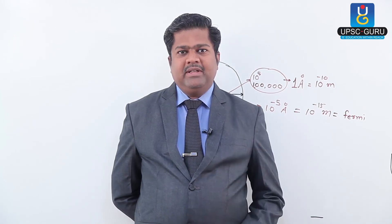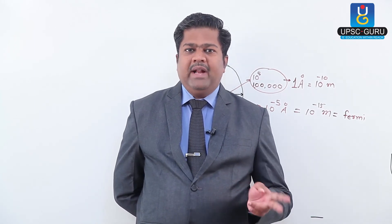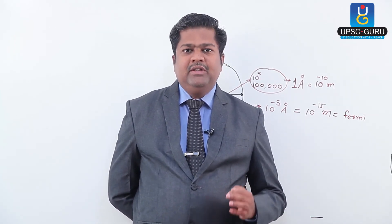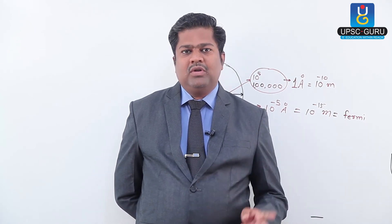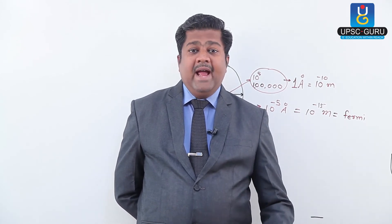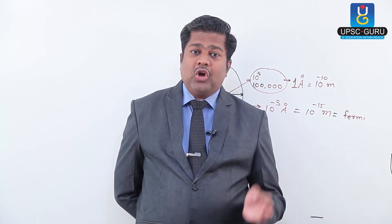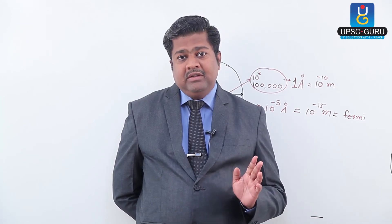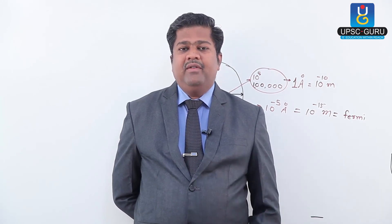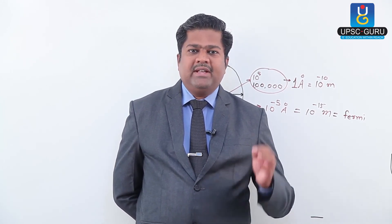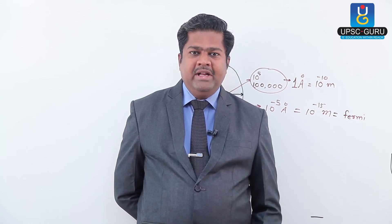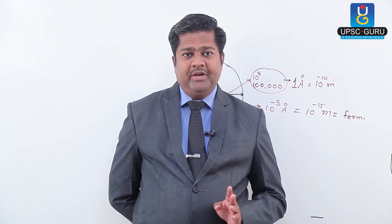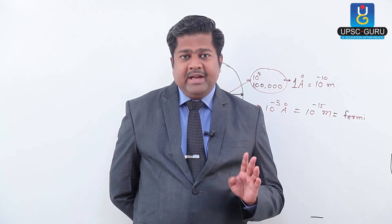So the first part is clear: the nucleus is almost 1 lakh times smaller than the atomic diameter. That is why we say the nucleus is extremely tiny — it is considered almost a point object.